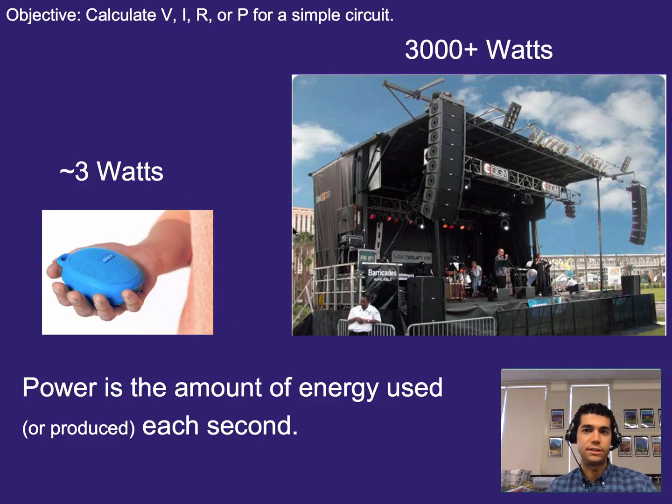Another example of the difference between different amounts of power, for example speakers. So we've got a little handheld speaker here, this one would be about three watts of energy worth of sound being put out each second, or sorry, three joules of energy being put out each second, which would be a watt, versus for a concert it would be closer to like 3000. So however much energy you're putting out each second, that is what power is.